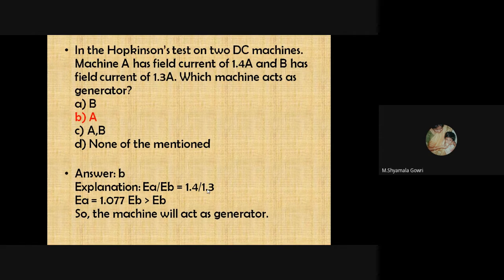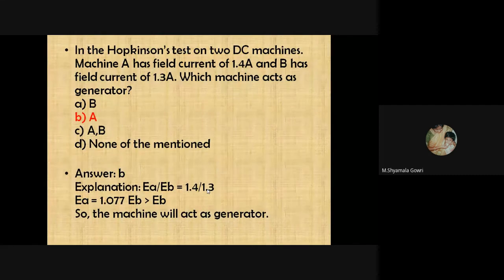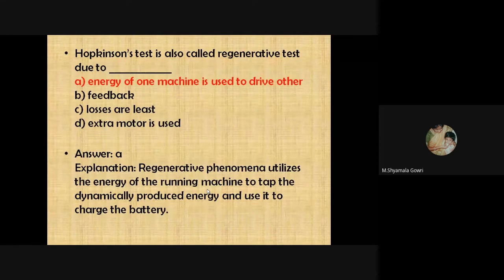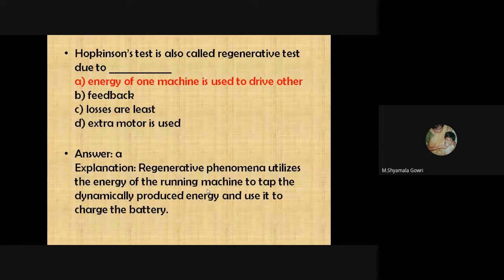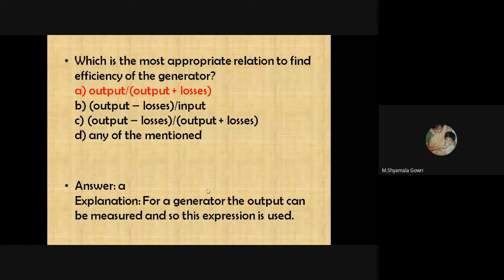In a Hopkinson test, machine A (with higher field current of 1.4 A) acts as the generator. The Hopkinson test is also called the regenerative test because the energy of one machine is used to drive the other — it utilizes the energy of a running machine to tap dynamically produced energy. The most appropriate relationship to find the efficiency of a generator is: output / (output + losses).